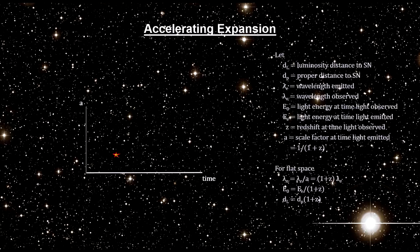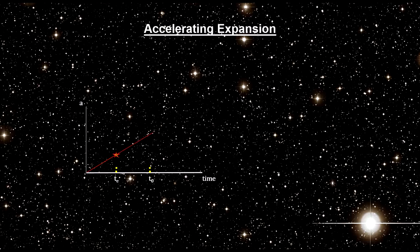If the expansion rate is constant, the relationship between the luminosity distance and the redshift will be constant. Given a redshift, we can compute the expected luminosity distance and therefore the expected observed luminosity. Comparing this to the actual observed luminosity, we would find them equal.